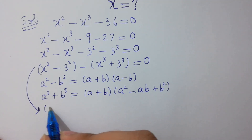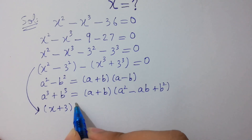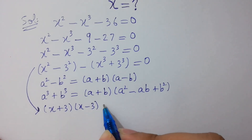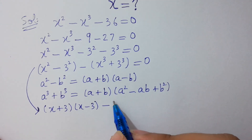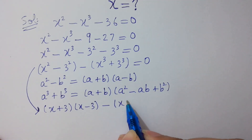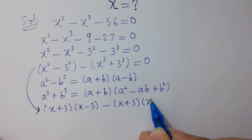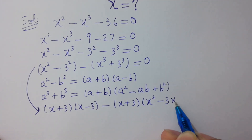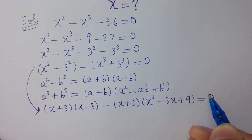giving (x+3)(x−3), and x cubed plus 3 cubed gives (x+3)(x squared minus 3x plus 3 squared), which is (x+3)(x squared minus 3x plus 9), all equal to 0.